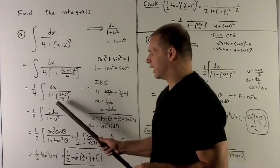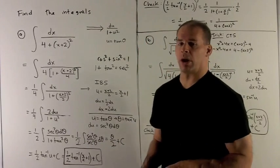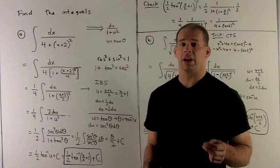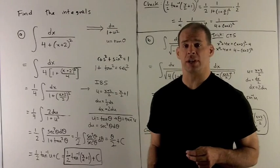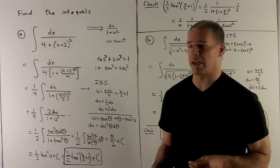So I substitute everything in. And you notice we have our du over 1 plus u squared as promised. From here, if I have it memorized, I can go straight to the answer. But let's do it the long way just to remind ourselves of how this works.